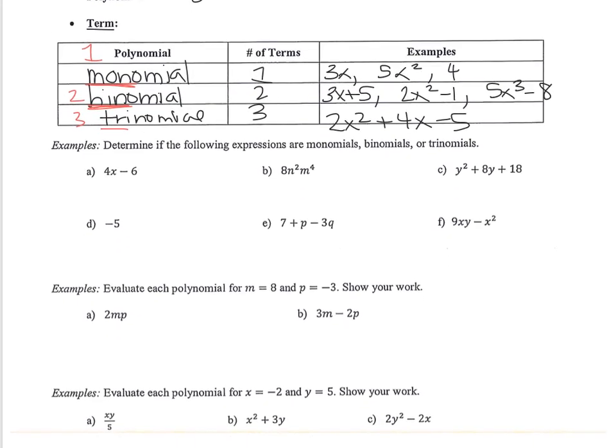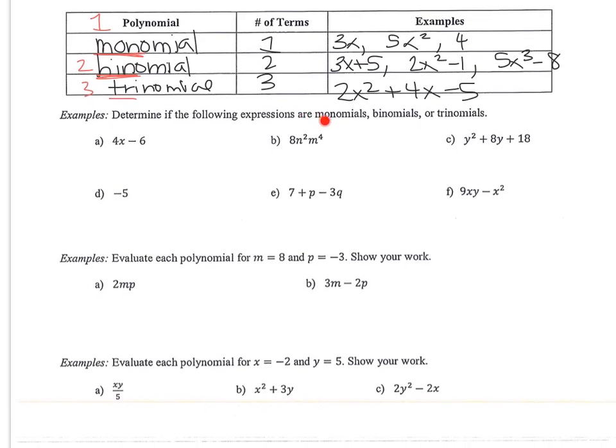So determine if the following expressions are monomials, binomials, or trinomials. So this has 2 terms. So it's a binomial. This one is 1 term. There's no plus or minuses that are separating them. So this is a monomial.